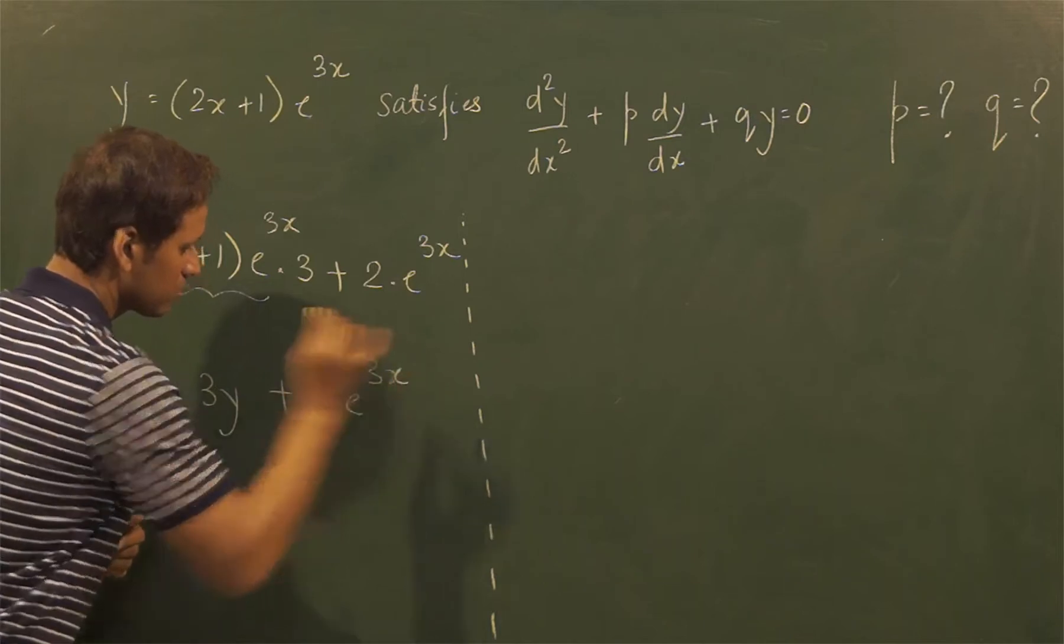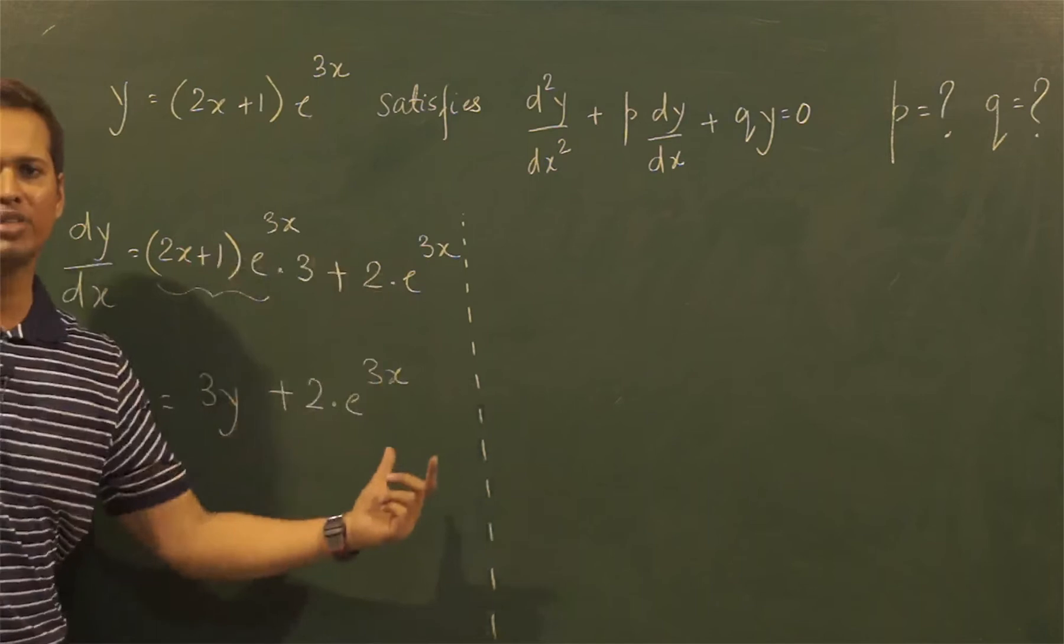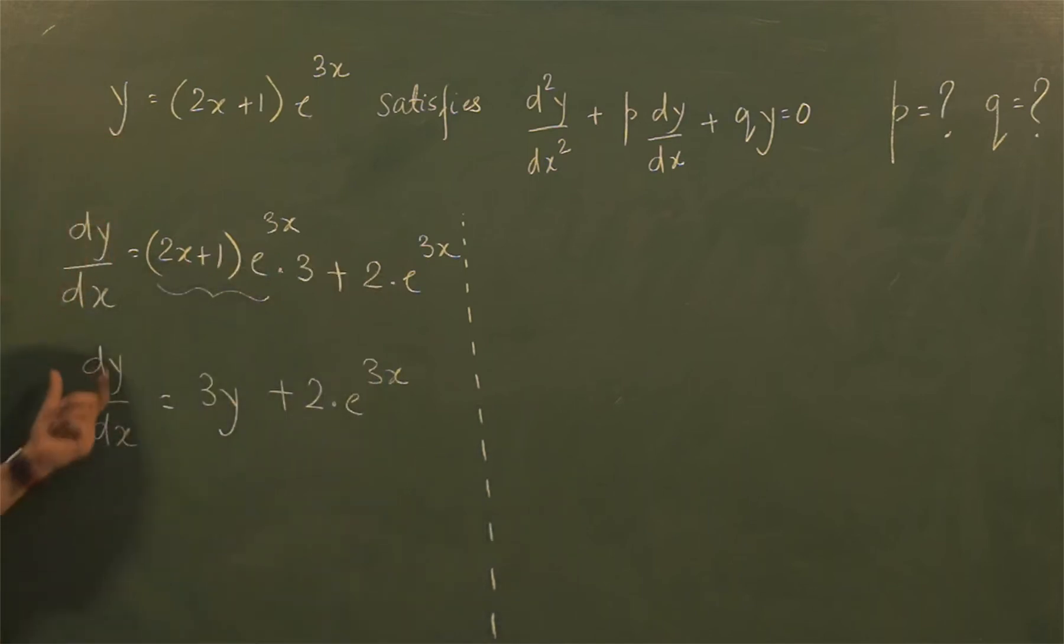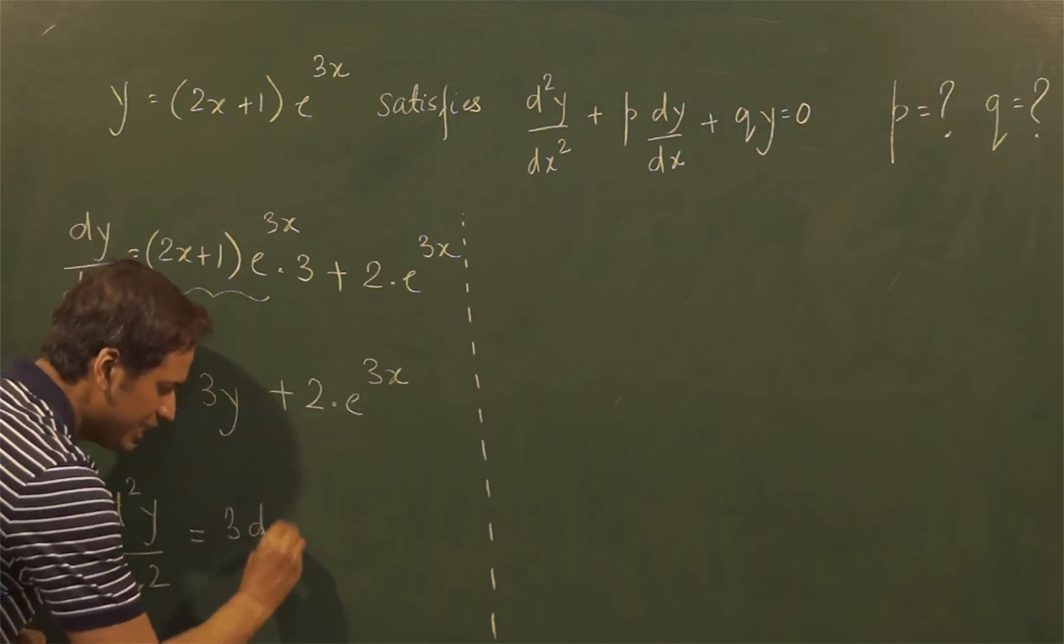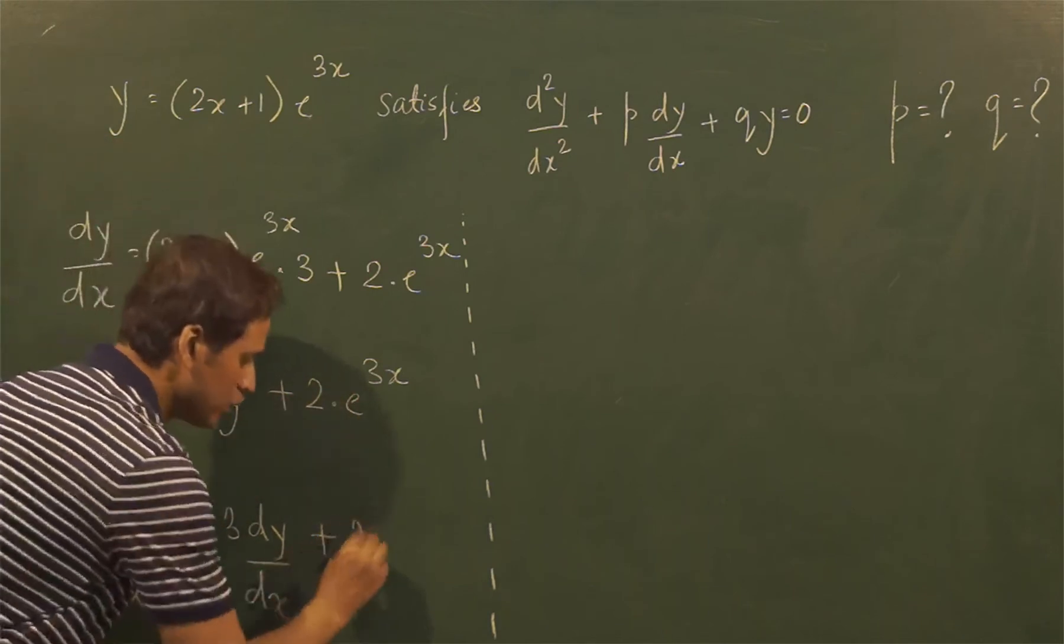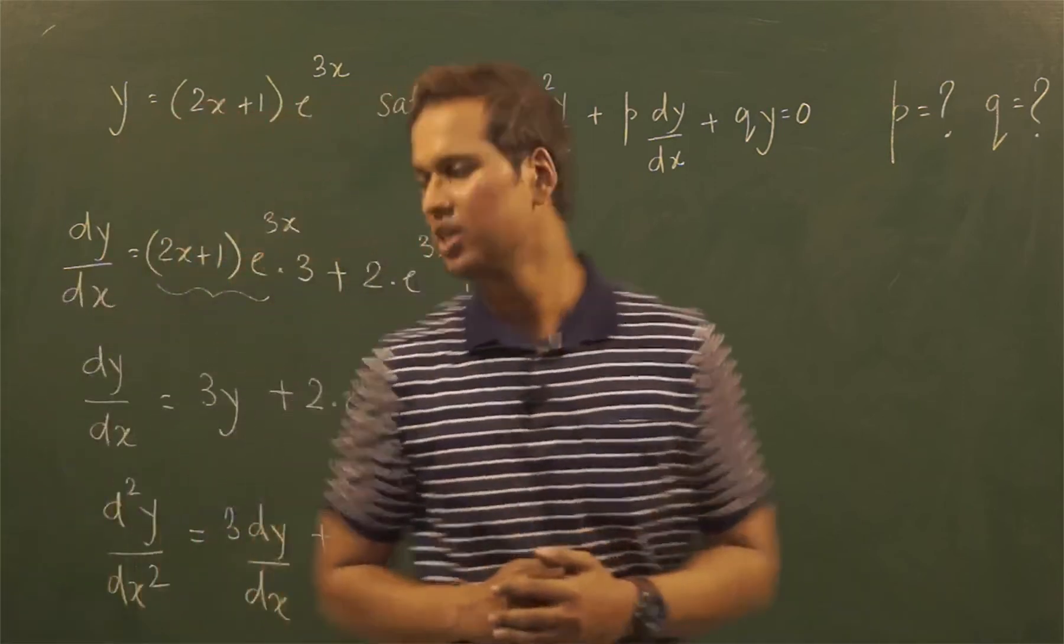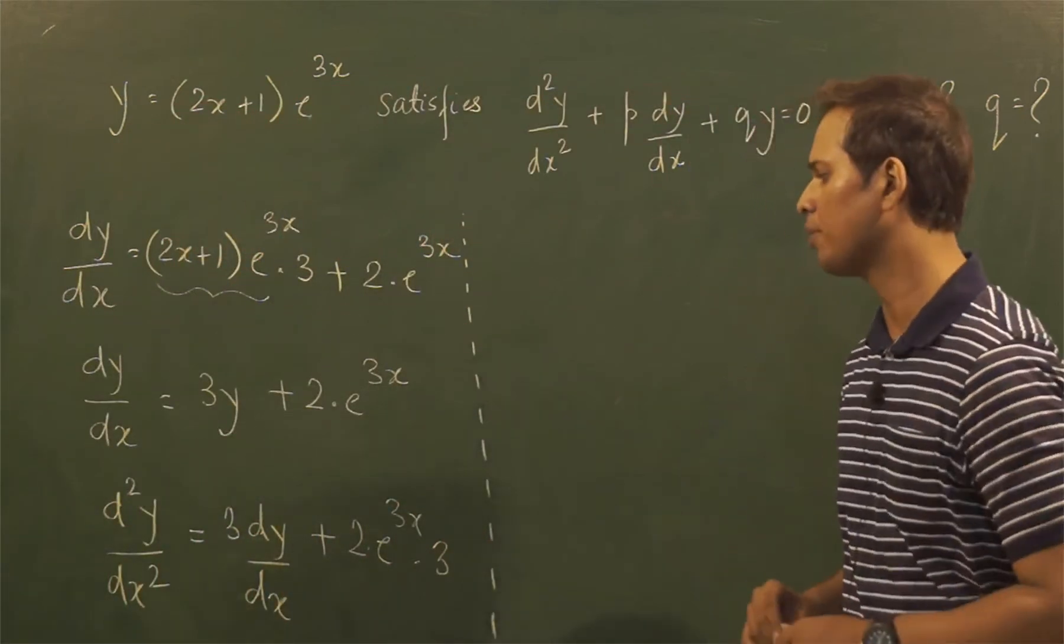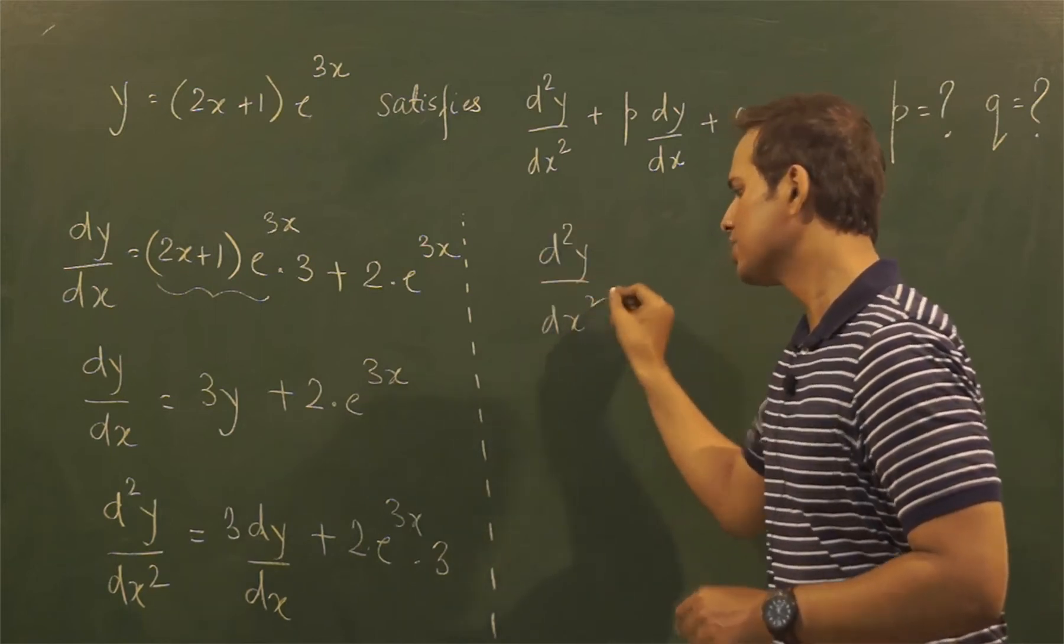Now at this stage you can now do the derivative of dy/dx once again with respect to x. So derivative of dy/dx will be nothing but d²y/dx² equal to derivative of 3y, which is nothing but 3 dy/dx, and what about this? This becomes 2 times e^(3x) times 3. So till this step there is no issue, there is no problem. Now from this step onwards I will do another smart move here.